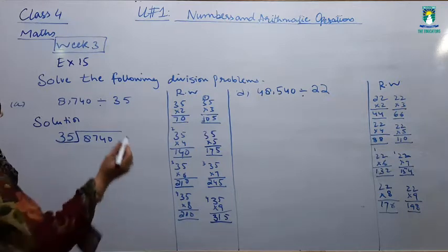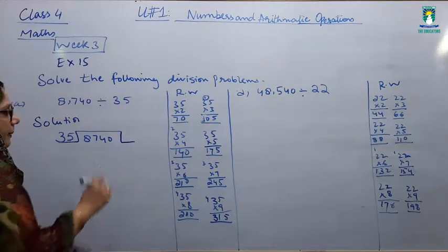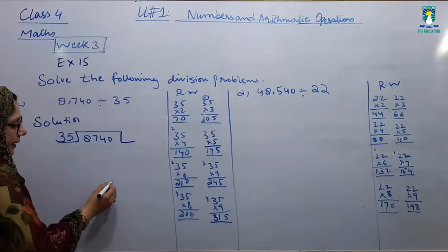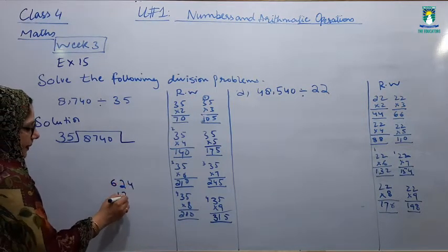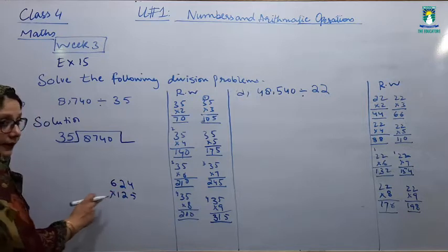Students, I have told you about multiplication. When we multiply with two or three digit numbers, we will multiply it. For example, 624 is going to multiply with 125. This is what we are doing here.